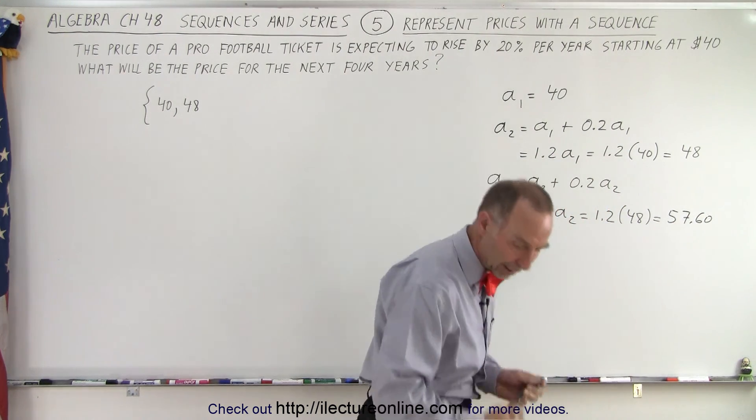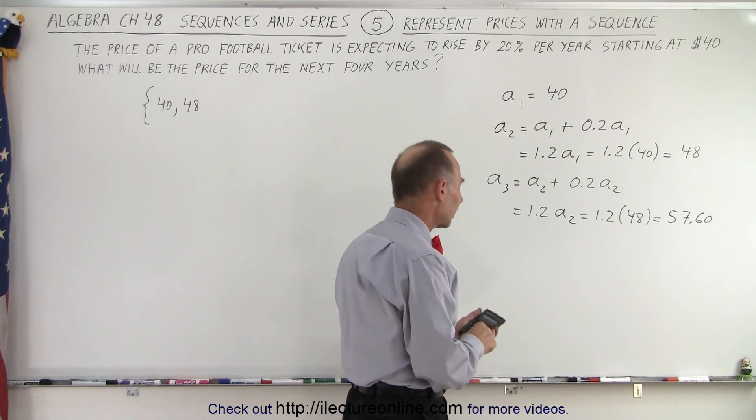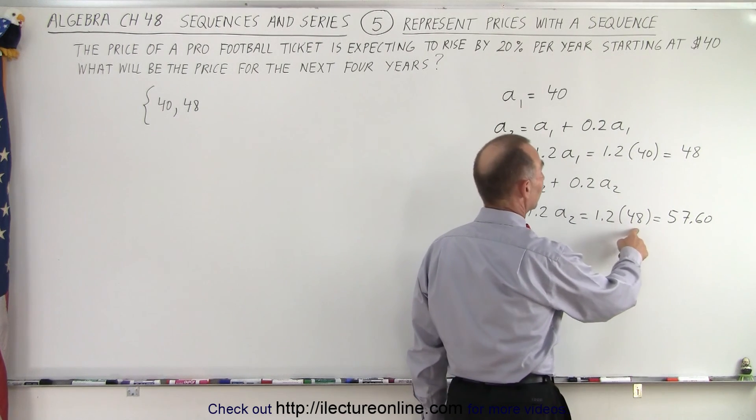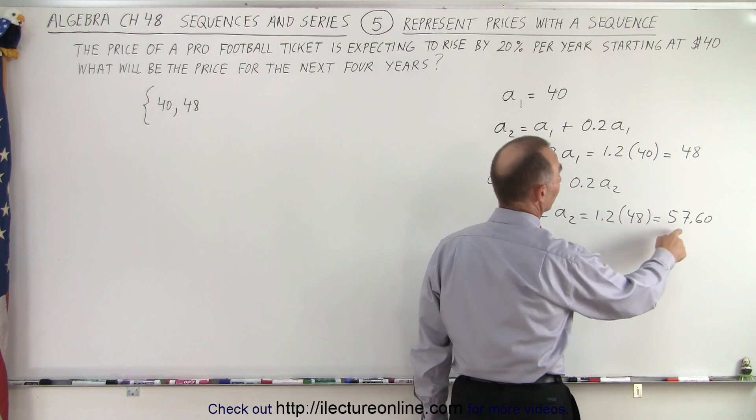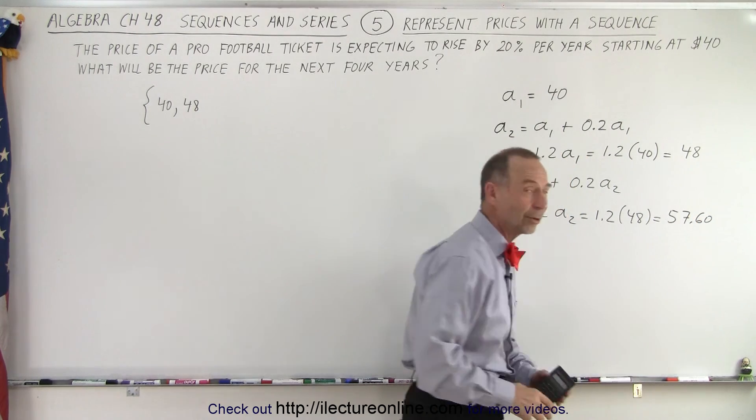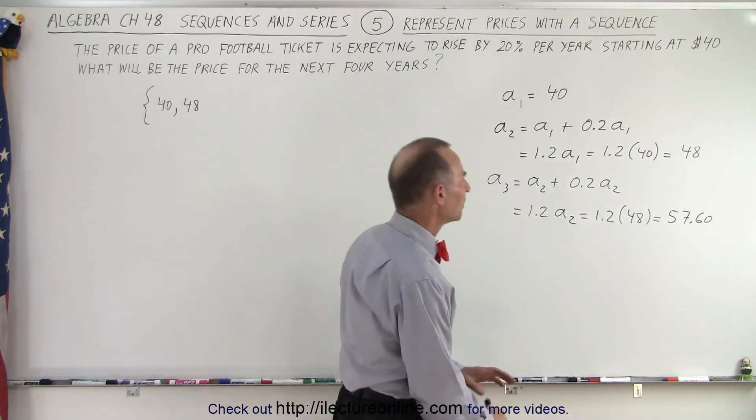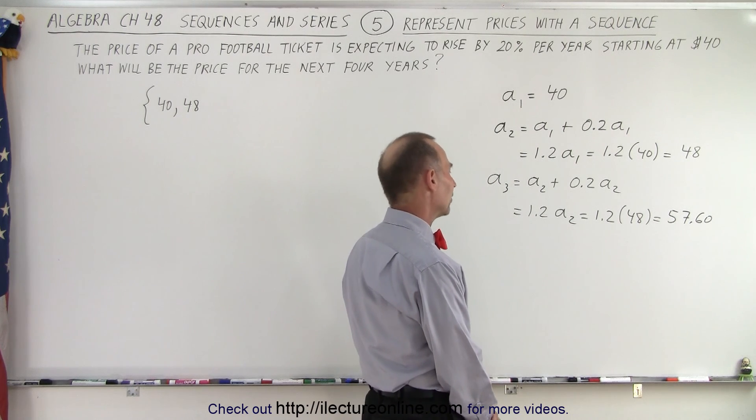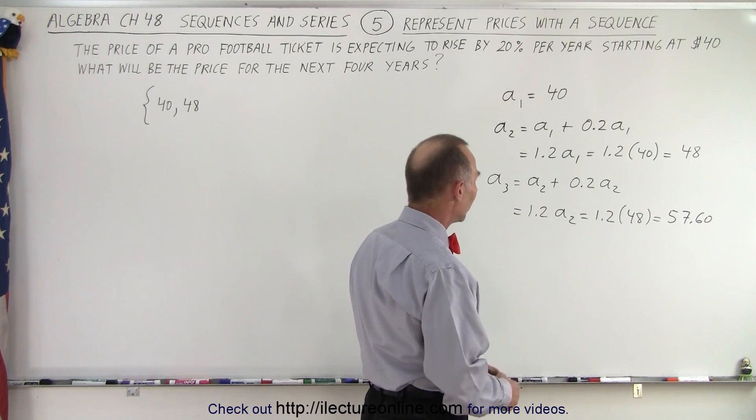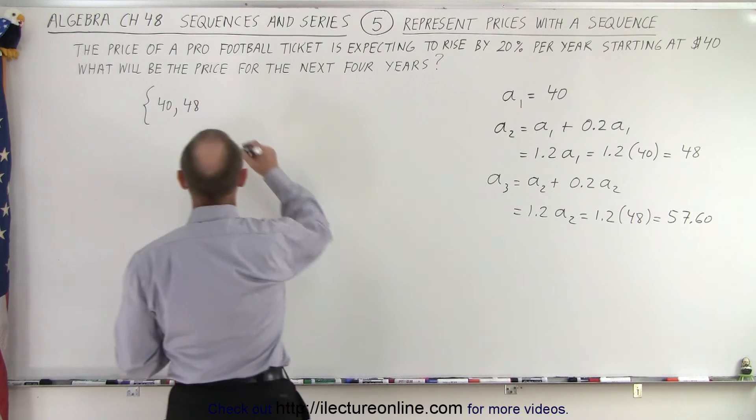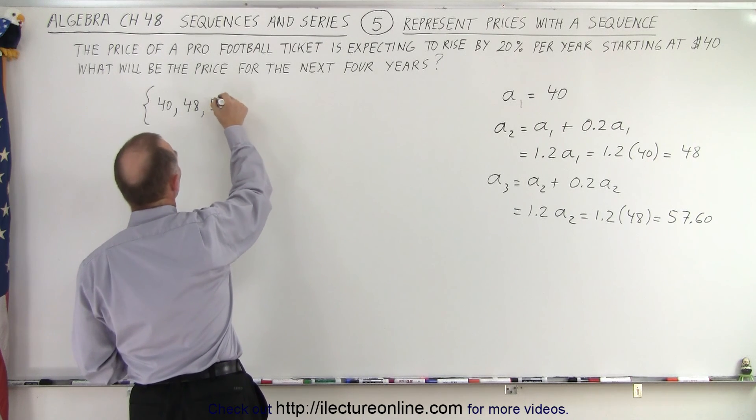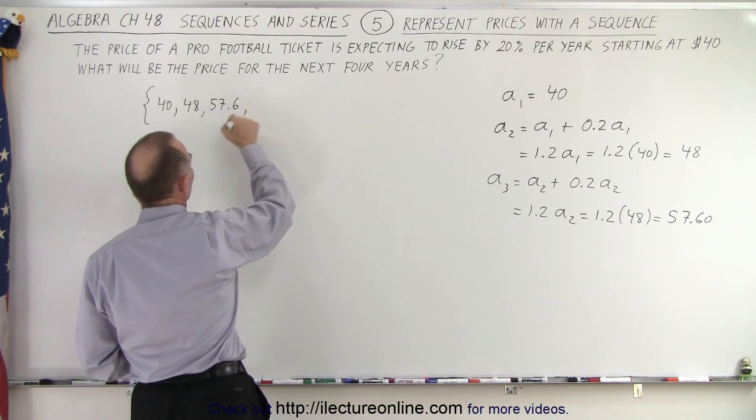Let me quickly grab a calculator, make sure I did that correct. Well, there's other ways of checking it. Yep, that is correct. Did a little trick to check. Anyway, that's 57.60, and so that would be a₃. That will be the next term in our sequence, 57.6.